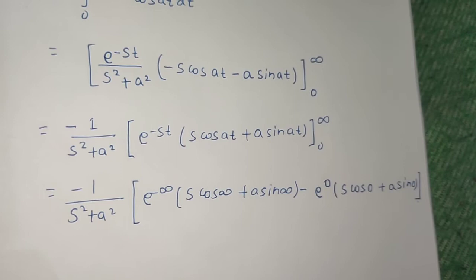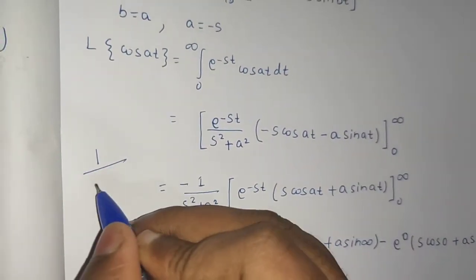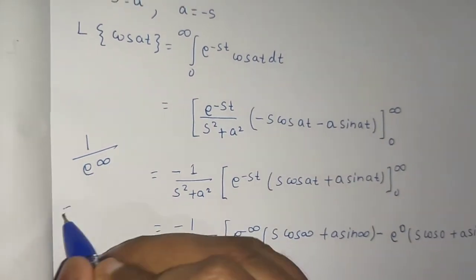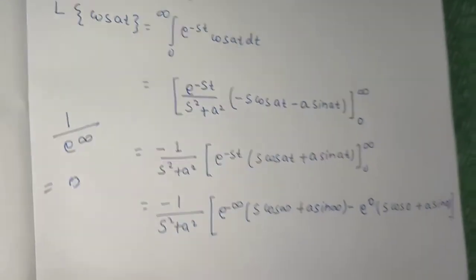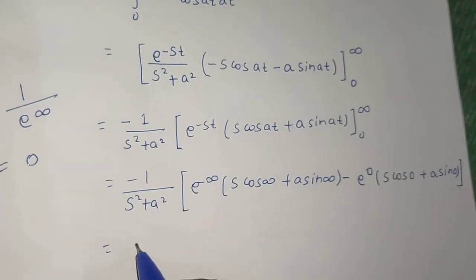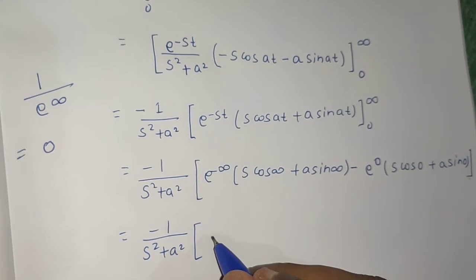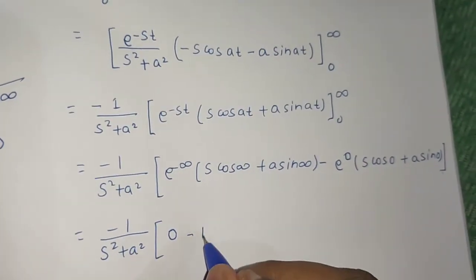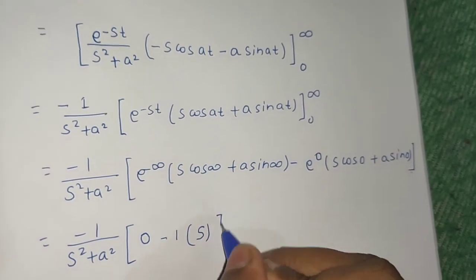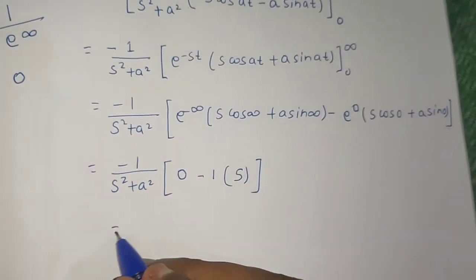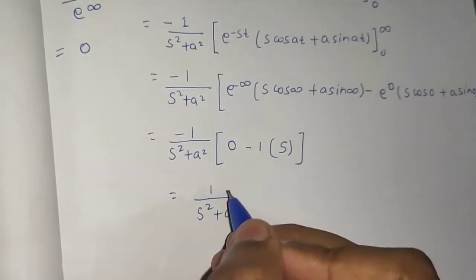Now e^(−∞) can be written as 1 over e^(∞), which is 1 over a very large quantity, so it equals 0. And e^0 = 1. So we simplify: 1/(s² + a²) times [0 − 1·(s·cos(0) + a·sin(0))]. Since cos(0) = 1 and sin(0) = 0, we get −s/(s² + a²), and the minus from our formula gives us s/(s² + a²).